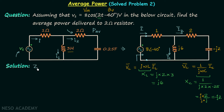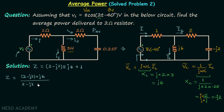The impedance Z equals 2 in series with −j2, that combination in parallel with j6, and then in series with 1. So Z = (2 − j2) ∥ j6 + 1. Computing the parallel combination: (2 − j2)(j6) / (2 − j2 + j6) + 1, which simplifies to (6 + j6) / (1 + j2) + 1.